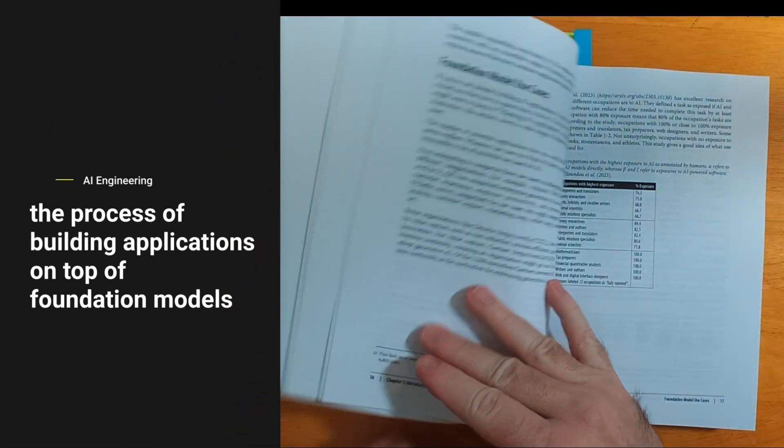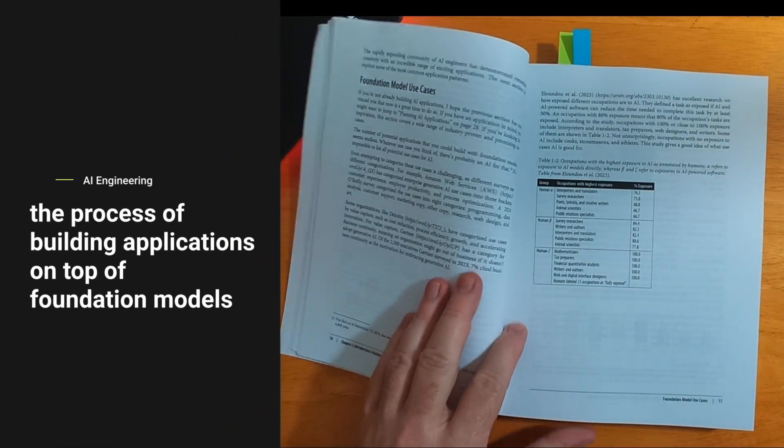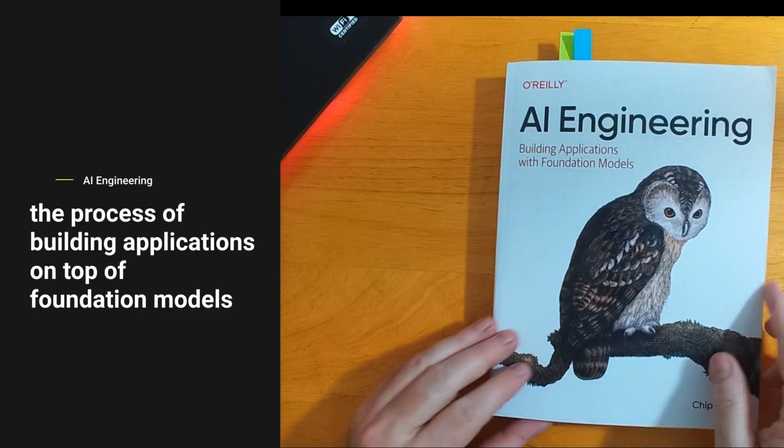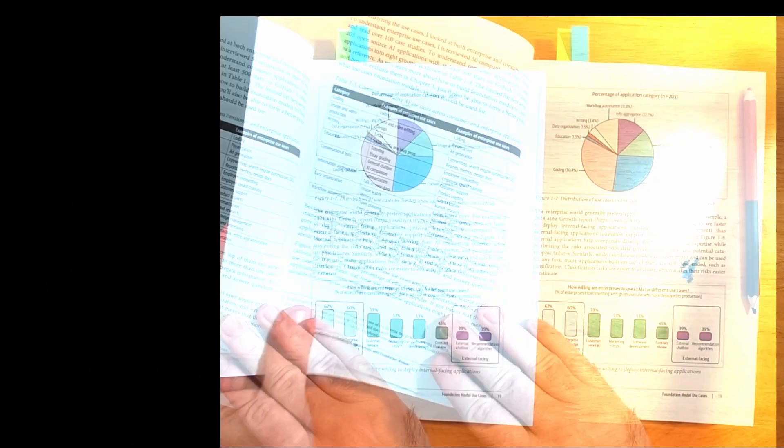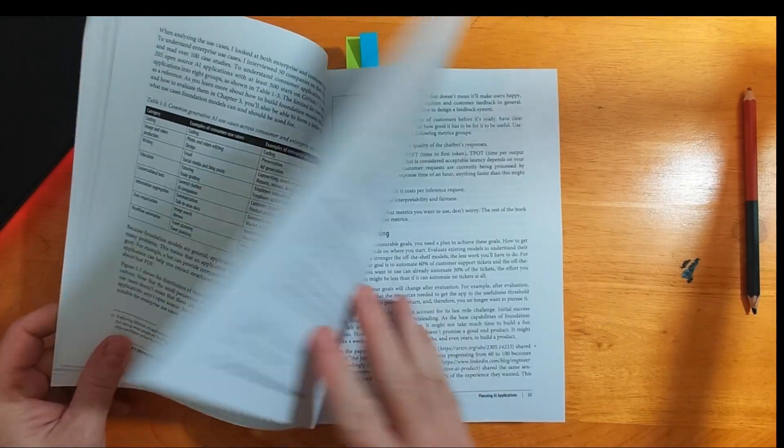Hi, everybody. AI engineering is the process of building applications on top of foundation models. That definition is from a phenomenal book by Chip Huyen.